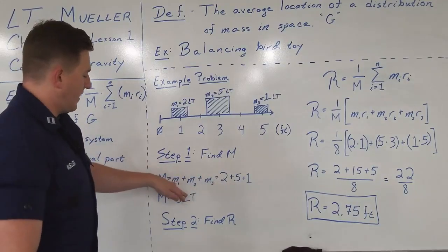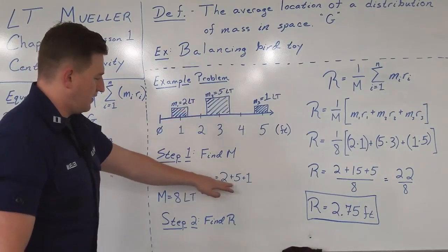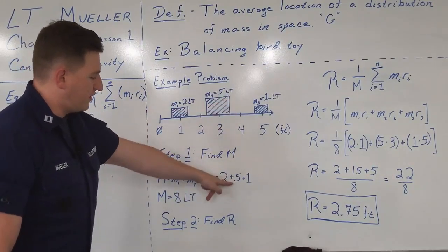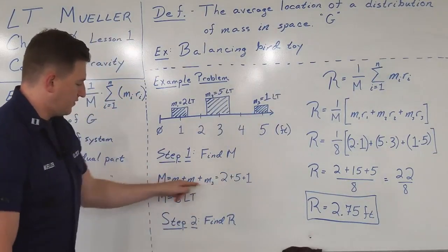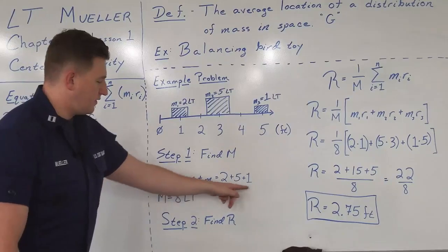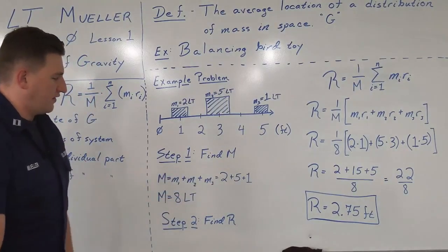Let's plug in the numbers. M1 is two, that goes there. M2 is five, that goes there. And M3 is one, and that goes there. So two is M1, five is M2, one is M3. Add them together and you get eight long tons.